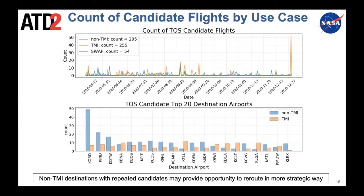The count of candidate flights shows non-TMI had the most opportunities at 295, TMI close behind at 255, and swap few and far between. However, on the next slide showing benefits, even though swap opportunities are rare, the benefits are so large you really want to be prepared to act on them. For non-TMI candidates broken down by destination airports, a small handful of destinations show concentrated candidates — for example, O'Hare had many candidate reroutes even without TMIs in place, suggesting these may allow more strategic rerouting.